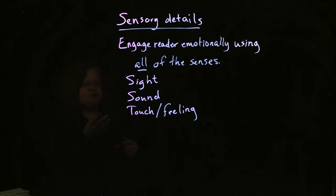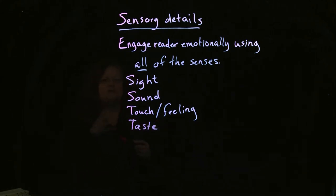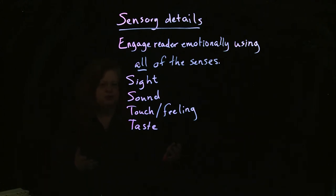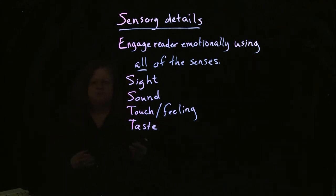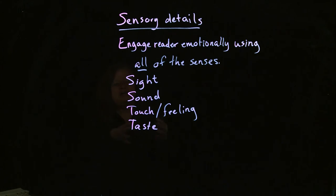Another sense is taste, which often has a strong emotional connotation. For example, if you're talking about a special occasion, a lot of times there's special food that goes with it — like a wedding, where you may talk about the taste of really sweet icing on the wedding cake, how it tastes all sugary and pink. Or if you're describing a situation where you were nervous or frightened, you may have that sour taste that comes up in the back of your mouth. That's another way to get the reader very emotionally involved.